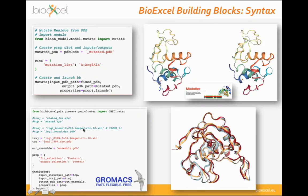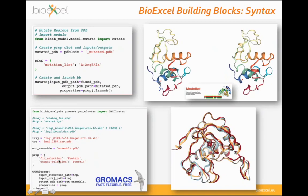Here is a real example generating a cluster of an ensemble of structures from a trajectory using the GROMACS cluster tool. We import the module, define inputs — trajectory and topology (using our PDB as topology) — the output ensemble.pdb, and properties: fitting the selection to protein atoms and outputting the ensemble of protein atoms only. We launch the cluster building block with inputs, outputs, and properties. Always the same.